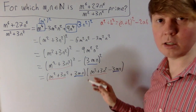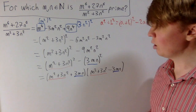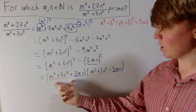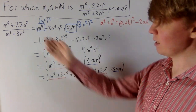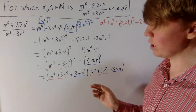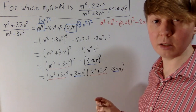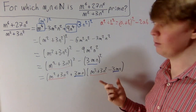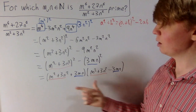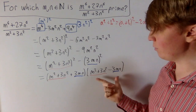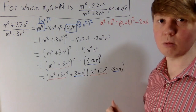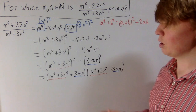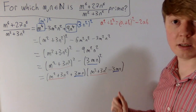Now that we have the expression factored as (m² + 3n² + 3mn)(m² + 3n² − 3mn), it's just a matter of checking: if either bracket equals 1, the original expression could still be prime. But if neither bracket equals 1, then it has at least two factors greater than 1, so it cannot be prime.